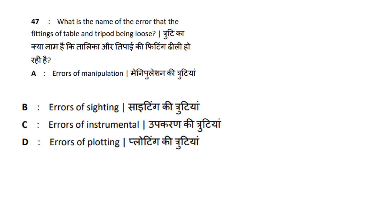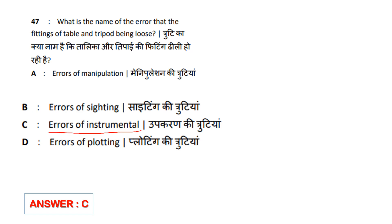What is the name of the error where the fitting of the table and tripod being loose? Options: Errors of Manipulation, Errors of Sighting, Errors of Instrumental, Errors of Plotting. Answer option C is Error of Instrumental.